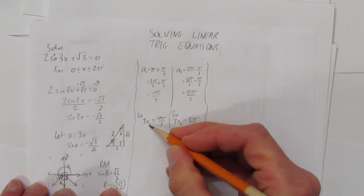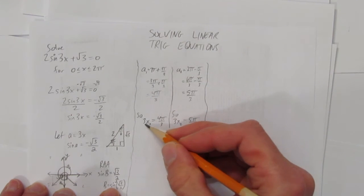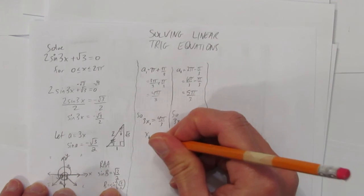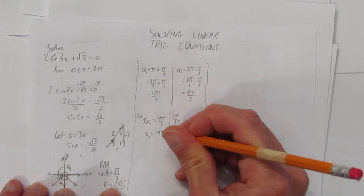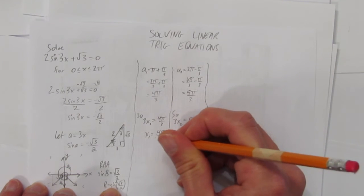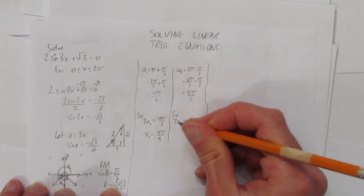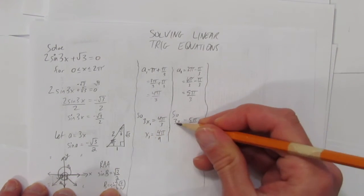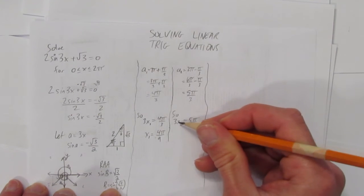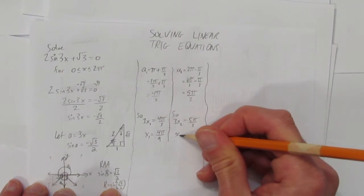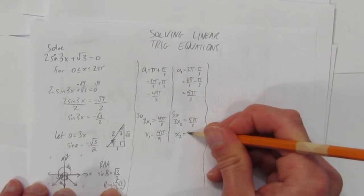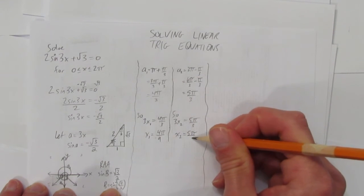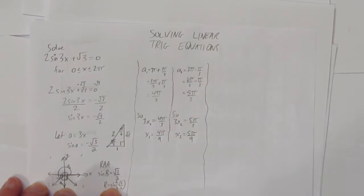Now we just solve. This is an easy one to solve. You have a 3 here times x. How do you get rid of multiplying? Divide both sides by 3. When you divide both sides by 3, the 3's cancel out here, and on this side you get 4π/9. Same over here. Divide both sides by 3. I don't want this 3 anymore, so divide this side by 3. You get x2, but you have to divide both sides by 3, and you get 5π/9. We've got two answers. Now we're getting close.